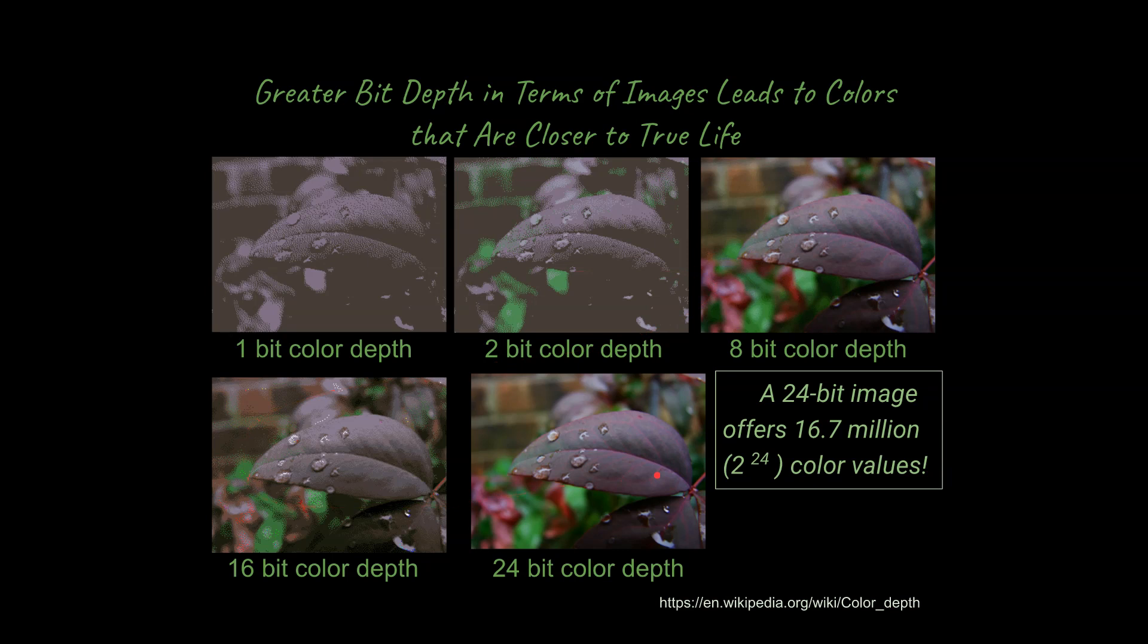And if you're dealing with a 24-bit color depth, that's over 16.7 million color values that you could have if you're working with a digital camera.